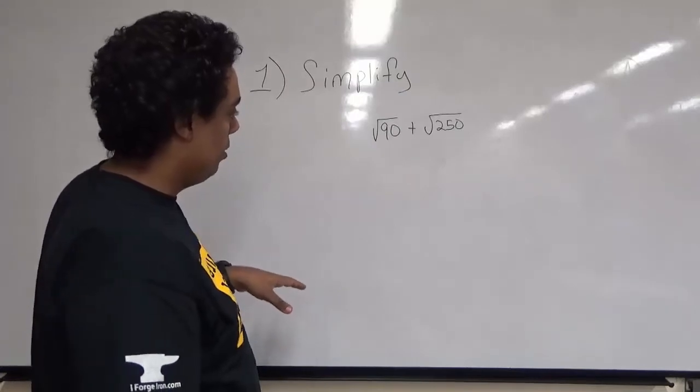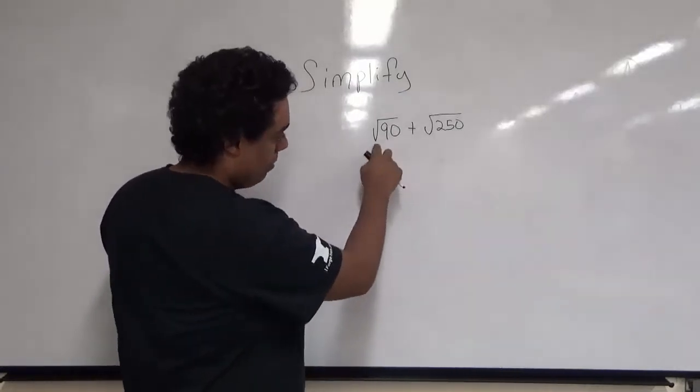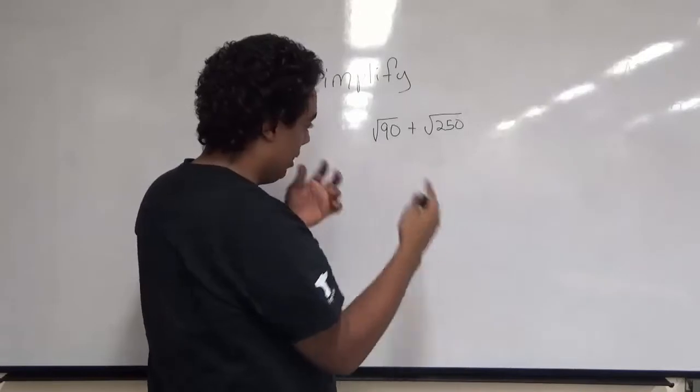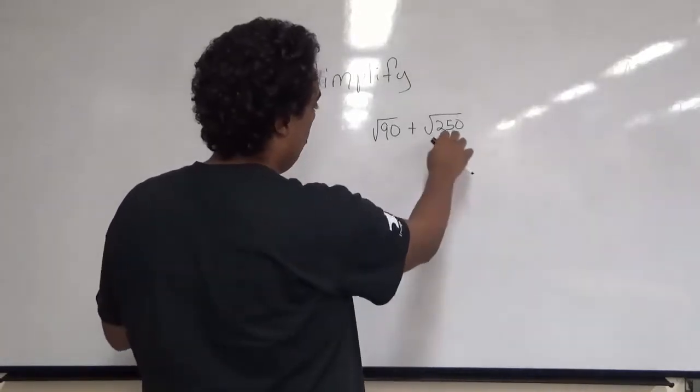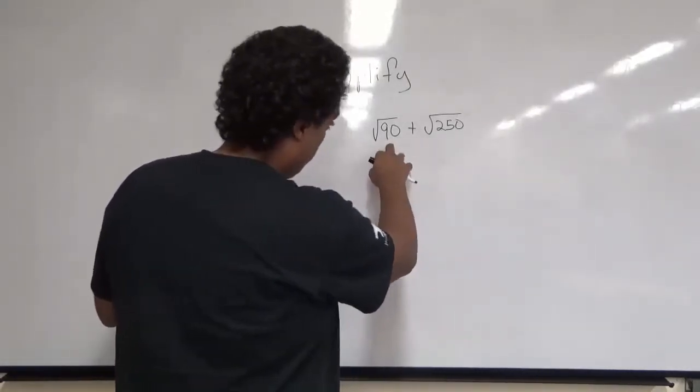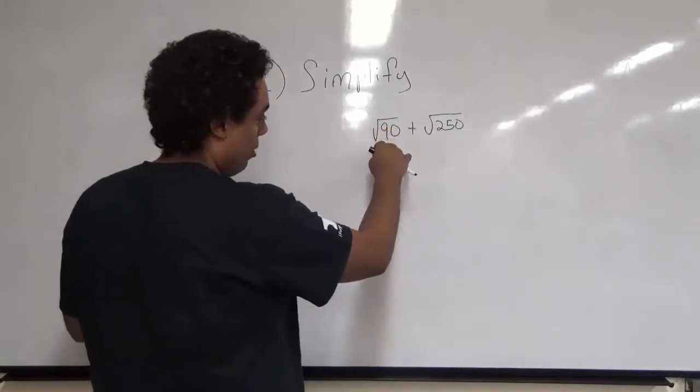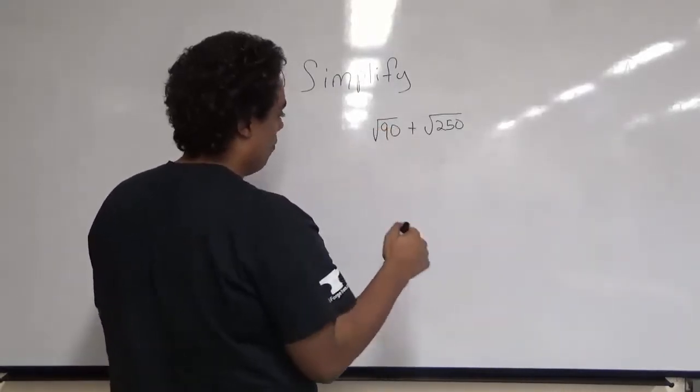The first thing we want to do is try to combine them, but we see since they have different terms inside, we can't. So let's see if we can break down the numbers inside of the radical to different multiples and look for perfect squares.